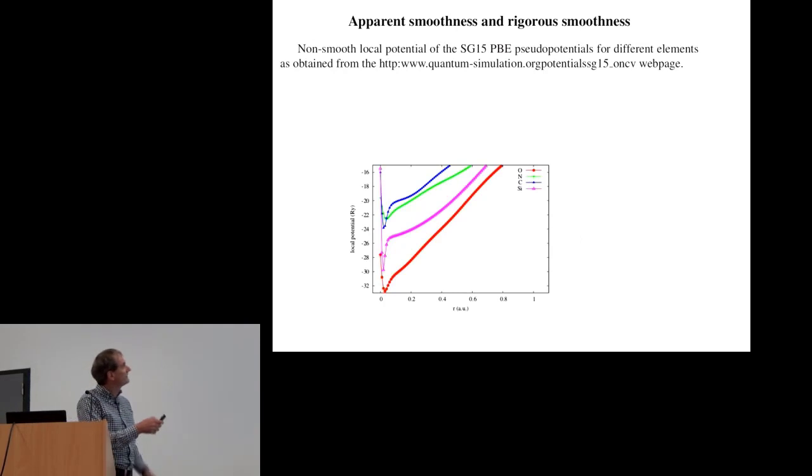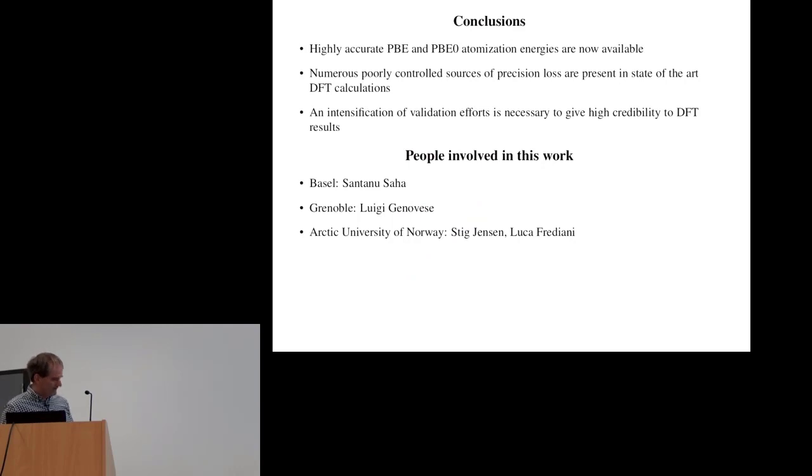I'm nearly at the end. Concerning the smoothness, we have to distinguish what I would call apparent smoothness and rigorous smoothness. Those pseudopotentials we constructed for low plane wave energy calculations, but if you plot the local part you find this behavior here. You have a very strong variation close to the origin, which would mean that if you really converge things in a mathematical sense, you would need a huge plane wave cutoff, even though it's intended to be used with a low plane wave cutoff.